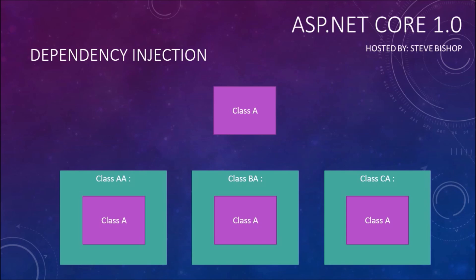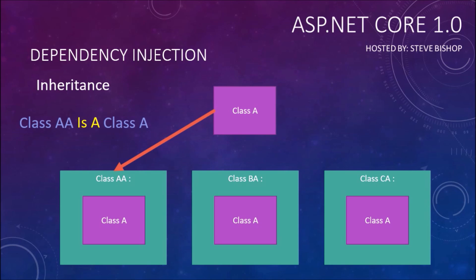Since you don't want to repeat yourself across class AA, BA, and CA, you simply inherit from class A — and that's of course what we call inheritance. Now this type of relationship is called an "is a" relationship. That means class AA is a type of class A, and we could say the same thing about BA and CA. It's just very important to remember that relationship — it's an "is a" relationship.